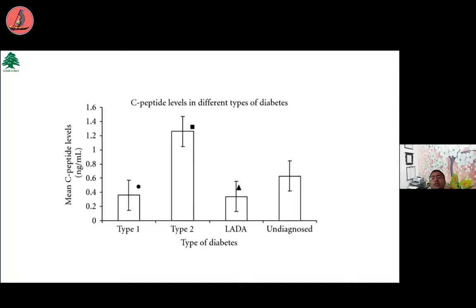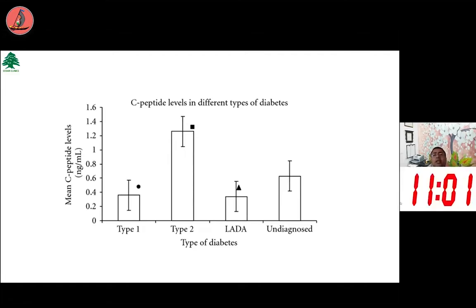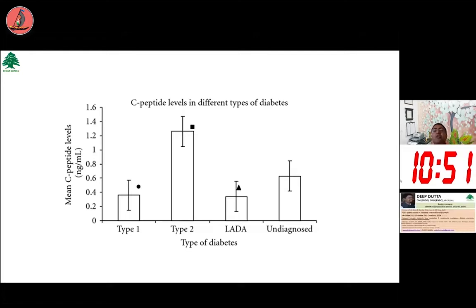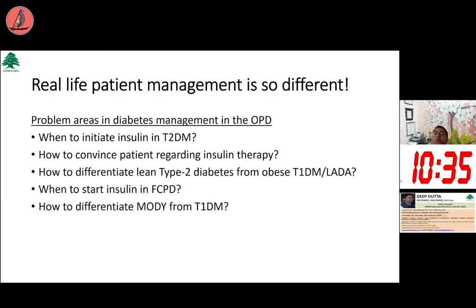Why do we talk about C-peptide testing? Because in people who have largely lost their beta cell function, C-peptide will be very low — maybe undetectable by conventional assays. This is typically seen in type 1 diabetes or latent autoimmune diabetes of adults (LADA). In type 2 diabetes, we expect C-peptide to be normal to very high, especially if a patient has metabolic syndrome and insulin resistance. In people with MODY, they may look like type 1 diabetes phenotypically, but their C-peptide may actually be good. In clinical practice, the patient doesn't have it written on their forehead whether it's type 1, type 2, LADA, or MODY.